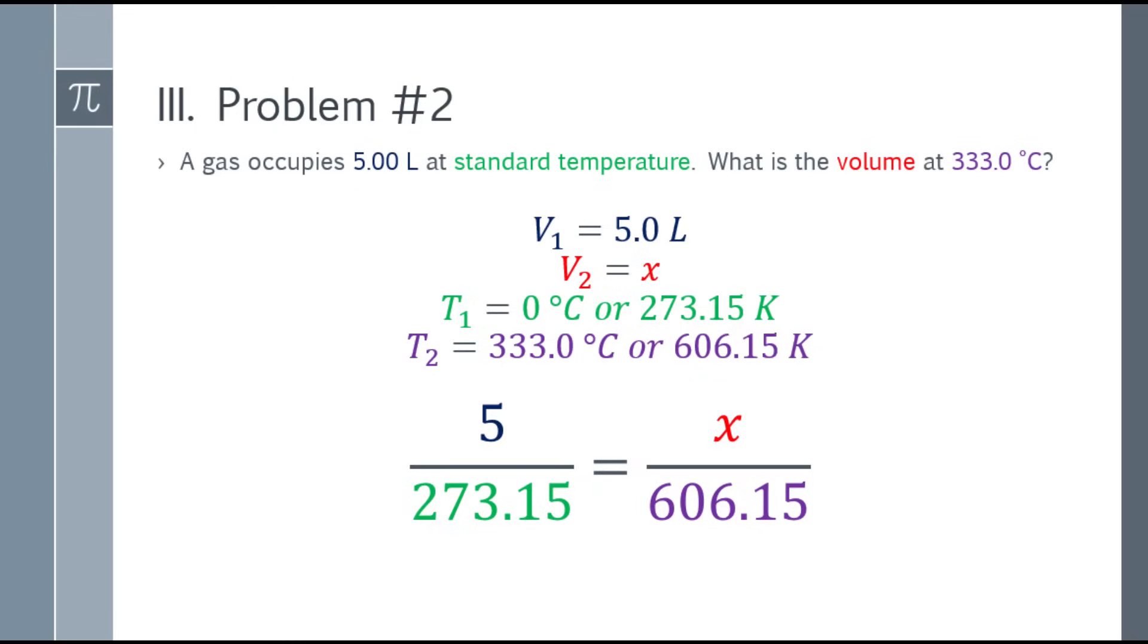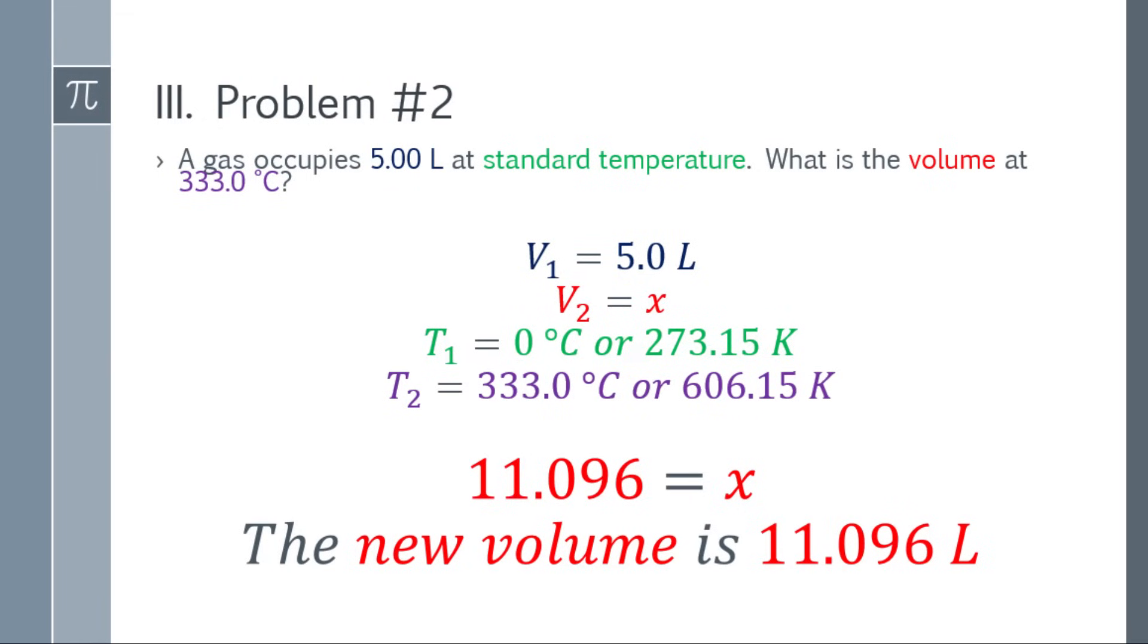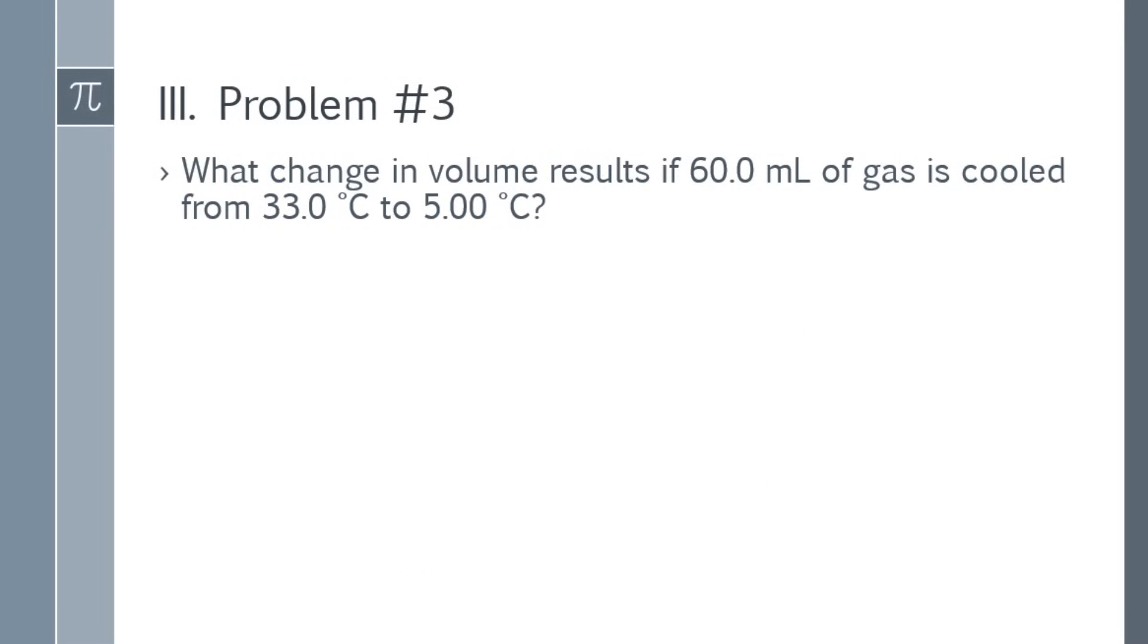Now find the value of x by cross multiply. So that will be 5 multiplied by 606.15. Divide that answer by 273.15, and you will get an answer of 11.096. So the new volume is 11.096 liters.